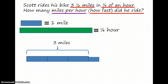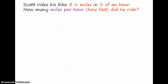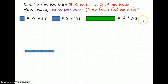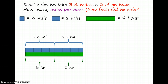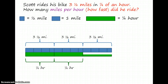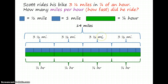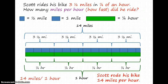So here we have three miles, and another half mile for three and a half miles that he rides in one quarter of an hour. We can see that this amount is equal to half a mile, this amount is equal to a mile, and this amount is equal to one fourth of an hour. So he rides three and a half miles in a quarter of an hour, and another three and a half miles is seven miles in one half hour. Continuing, three and a half plus three and a half is seven, plus another seven is 14 miles in one hour. So Scott rode his bike 14 miles per hour.